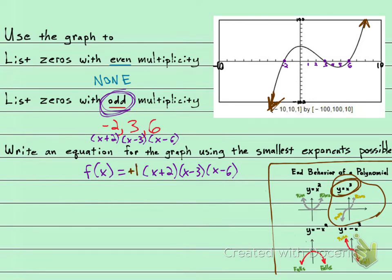We would need a positive 1 right here in our function. And of course, positive 1 times anything is just itself. So we actually don't need to write this. It's understood. And so our answer using the smallest exponents would be f of x is x plus 2 times x minus 3 times x minus 6.